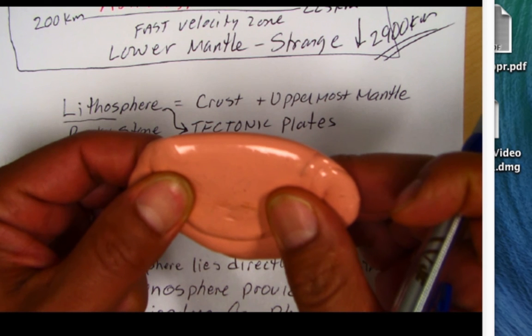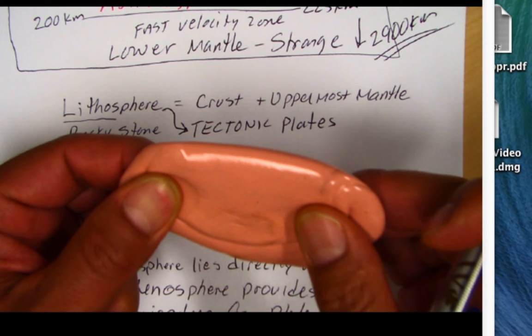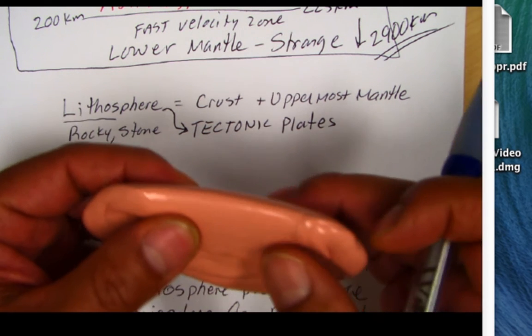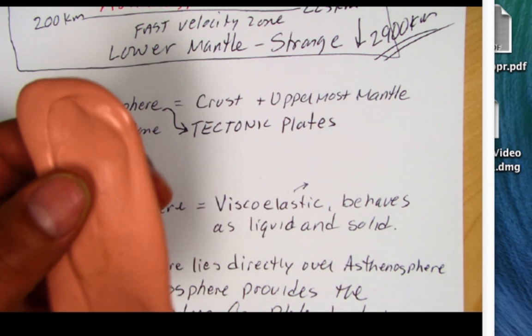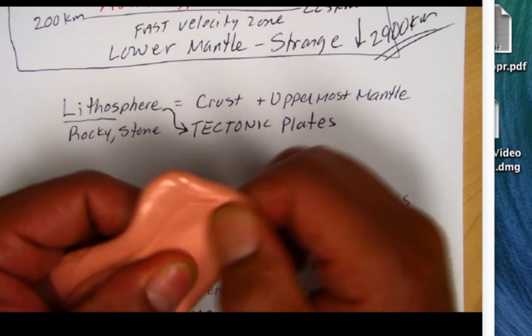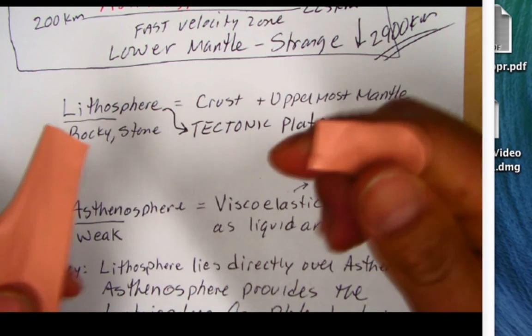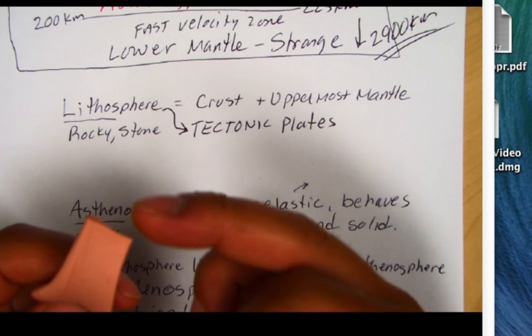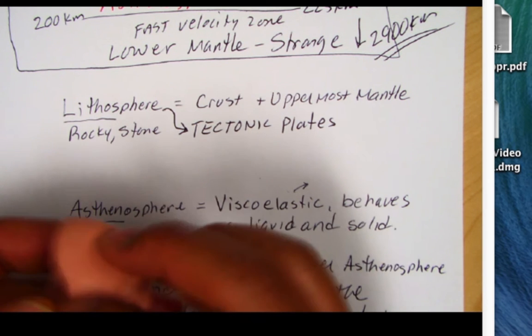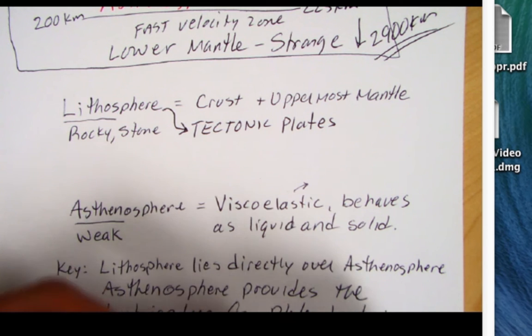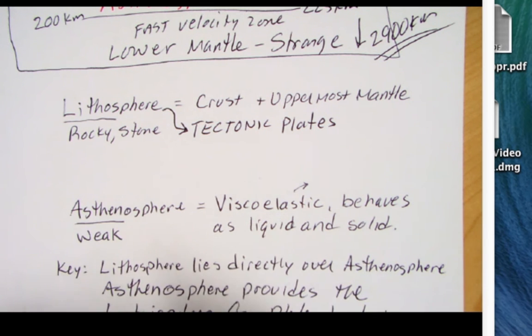Silly putty, you can stretch it. So it behaves like a liquid. But, and so if you do it very slowly, that's going to happen. But if I were to do this very rapidly, I can break it. You see this clean break? It breaks like a solid. So the mantle, or at least the asthenosphere, this weak sphere of earth, behaves in this fashion.